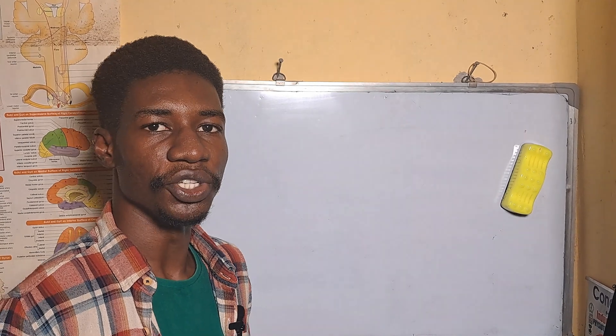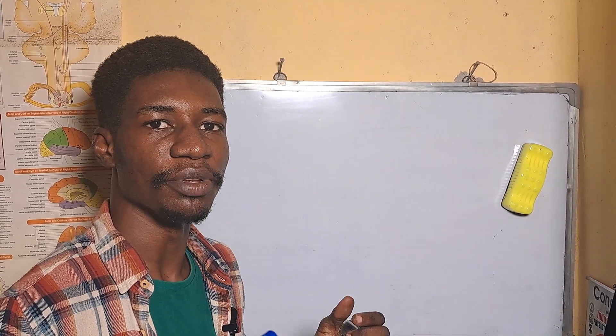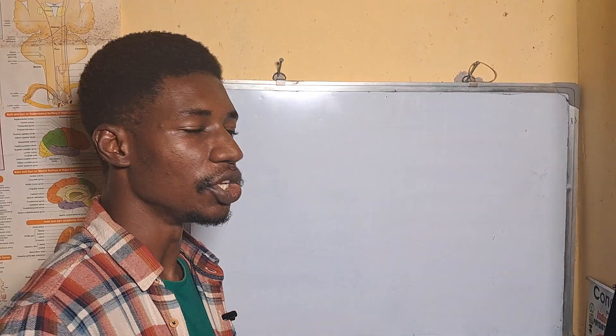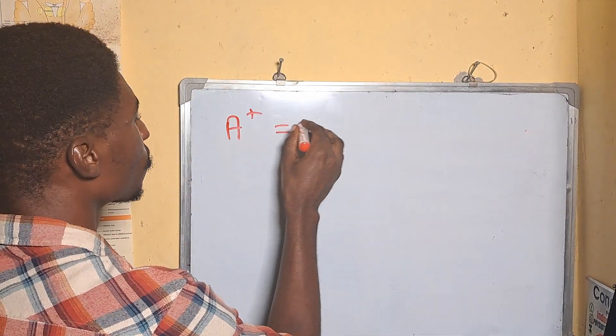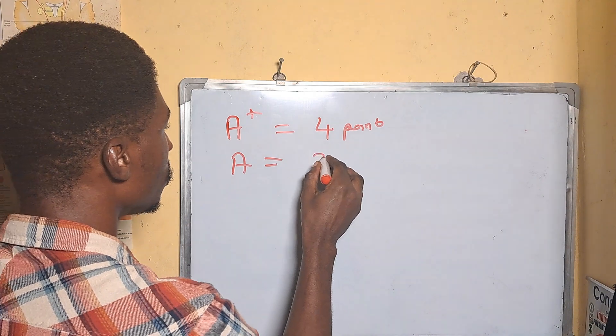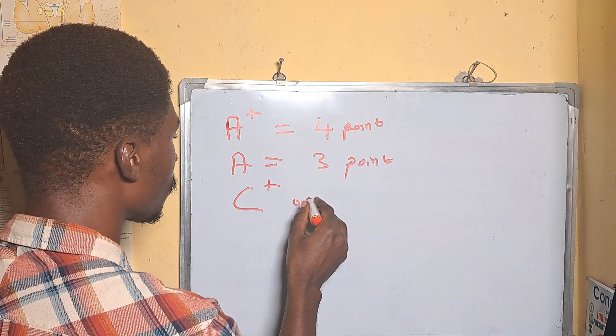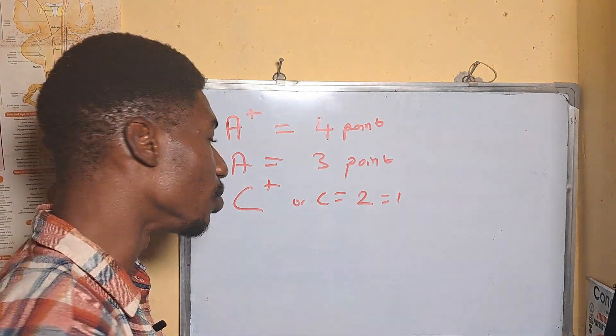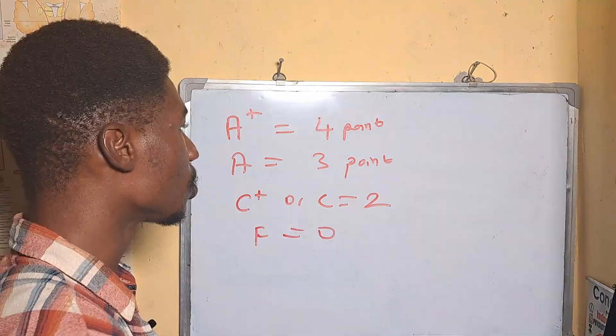Now in some countries the grade point system might be different from what I have just said in this video. But probably it will be A+ which is four points, A which is three points, and C+ or C which is two points. The other grades will be zero, so F will be zero. If this is the grade point system used in your country, you can calculate your GPA using the example in this video.